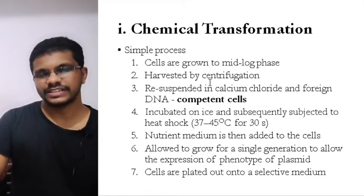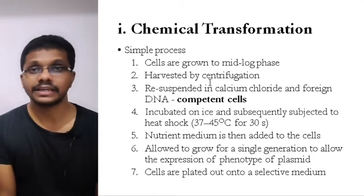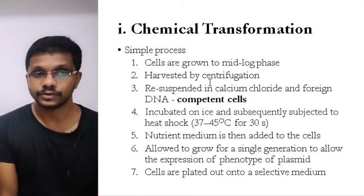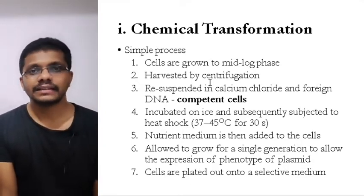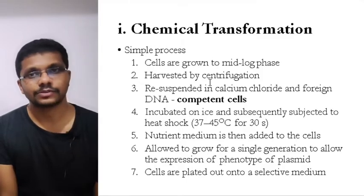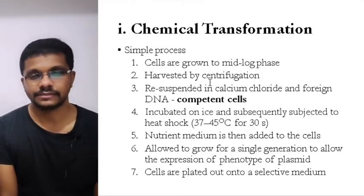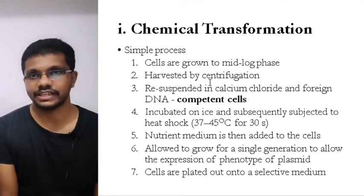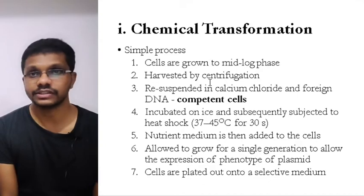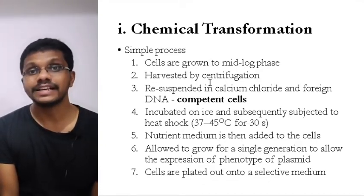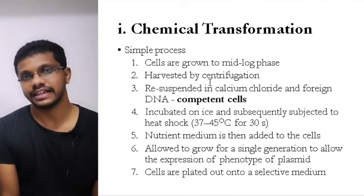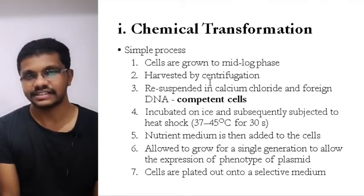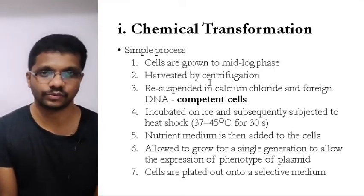Chemical transformation is very easy — we can achieve it by simple chemicals. The basic theory behind chemical transformation is that the plasma membrane as well as the DNA are negatively charged, so they repel each other. What we are going to do here is mask the negative charge of the DNA. Once we mask the negative charge of the DNA using positive ions, it can be easily taken up by the cell, because the plasma membrane is negatively charged. If the DNA's net charge becomes positive, it can attract the plasma membrane and be taken up. That's how the chemical transformation process works.